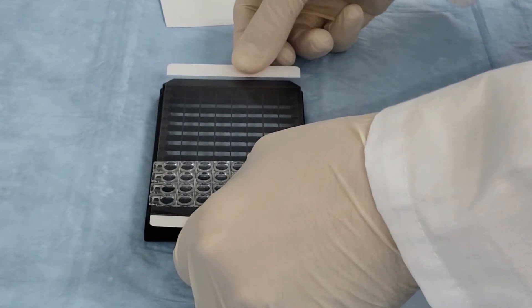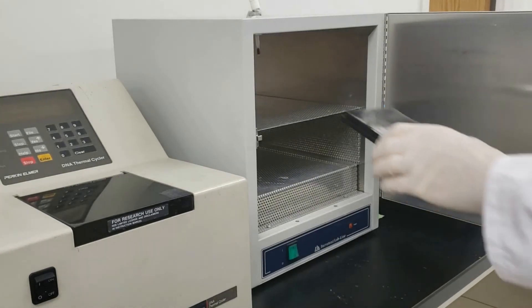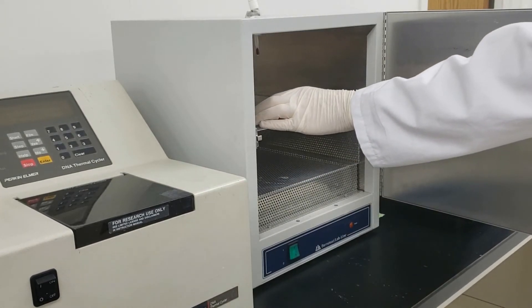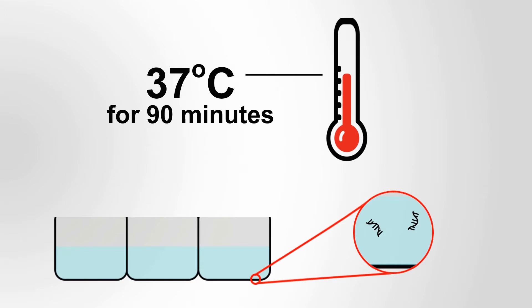Cover the strips with a plate seal, then place the plate in an incubator. Incubate the plate at 37 degrees Celsius for 90 minutes. During this incubation step, RNA will become strongly bound to the surface of the assay wells.